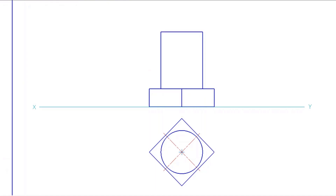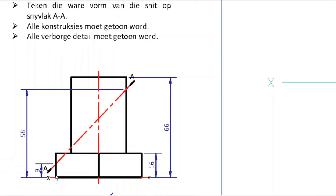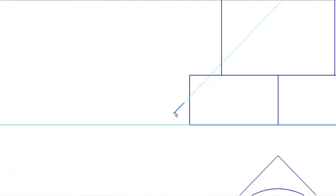Once you have your front and top view complete, draw the cutting line. From the base, measure up 9 to get the first point on the cutting line. Take 66 minus 58, which gives 8, so from the top corner go down 8 to get the second point, and draw the cutting line through it. Remember: the long line is 7 to 14 millimeters, the gap is 2 millimeters, and the short line is 2 millimeters. The ends should be thickened — the last 5 millimeters thickened with your pencil.